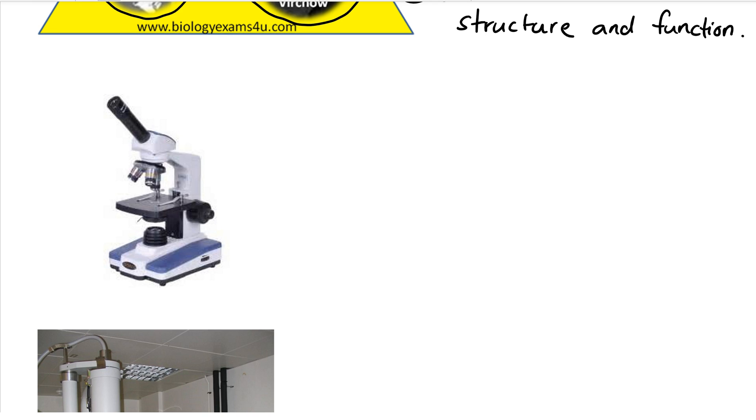Moving on to light microscopes, they have a source of light at the very bottom. Some have it at the top, but generally we use light as a source to look at our samples. This is called a light microscope. Right on top of it are the eyepieces where you put your eyes to look at the microscope.